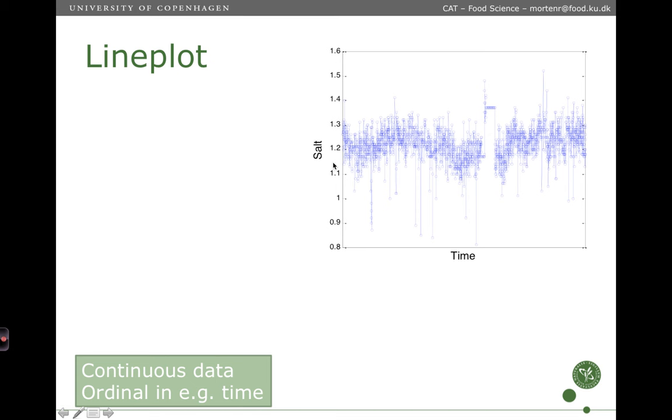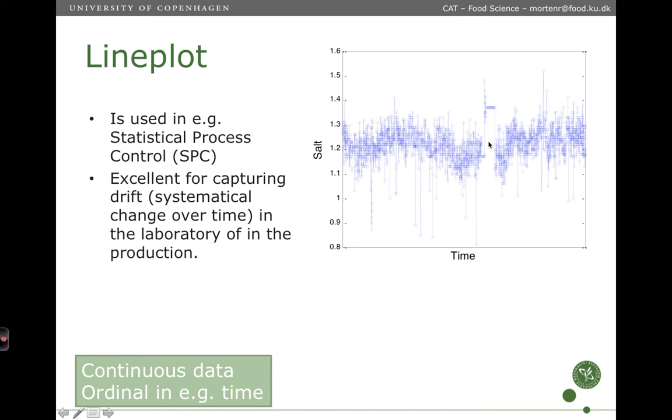Line plot. Here's an example of line plot. So we measure the salt content in a production. So what we see is that it goes up and down. So it follows some cyclical stuff. Then something happens here. And then it's stable. So maybe the process is shut down while the machinery is still running. Or maybe there's something wrong here. So if we just plot the salt content without this time information, it will be really hard to see the cyclic shape of the data as well as this peak here. So it's used in something called statistical process control. And it's excellent for capturing what we call drift. That is systematical change over time. So this for instance here is a systematical change over time. And that could be a production. But it could also be in a laboratory. If you go in the morning and you light up your machine. And then you see that it drifts over the day. Then you have a problem.